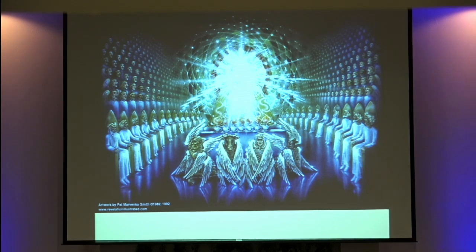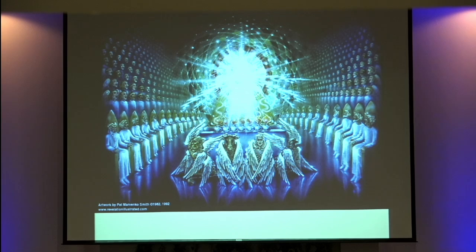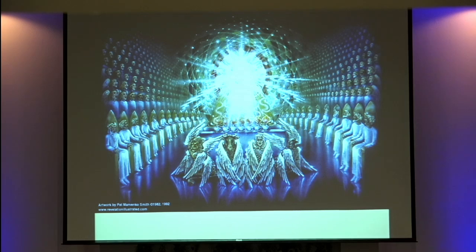There was a throne with one continually seated on it. The one who sat there — John begins to describe what he looked like. To him it looked like jasper — that is, a diamond: the brightness and clarity of the most magnificent thing he could think of. Perhaps that represents the pure holiness of God. The only way John could describe the holiness of God was, 'It looked like a giant diamond.' And not only that, but the one on the throne also had the appearance of a sardis stone.